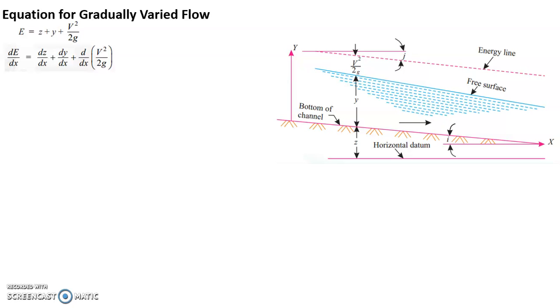So the terms you will get differentiation of Z with respect to X is DZ by DX plus DY by DX plus D by DX of V square by 2g. Now V square by 2g can be substituted with some more values. The meaning of D by DX of V square by 2g has other variables which comes into picture now. So V is Q by A, the classical continuity equation. Or A is B into Y.